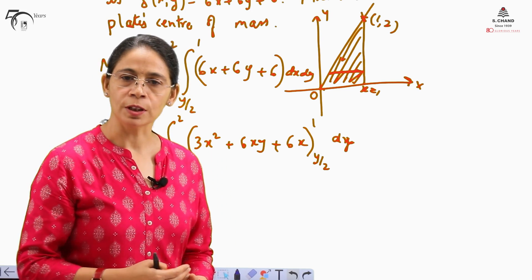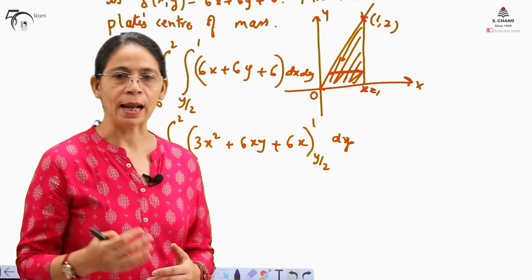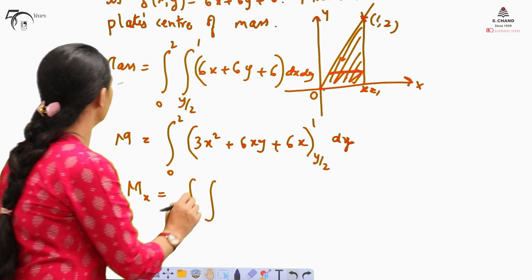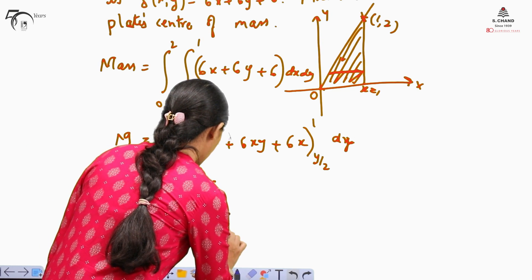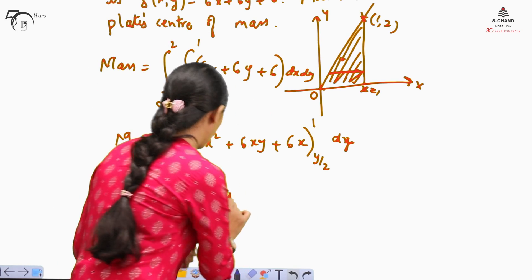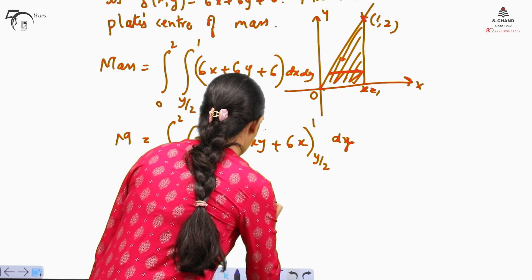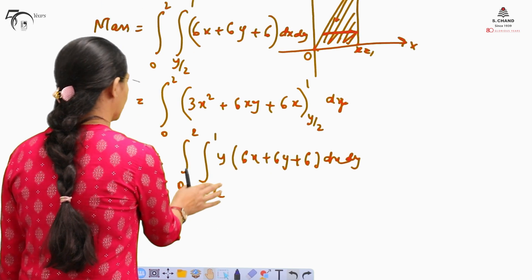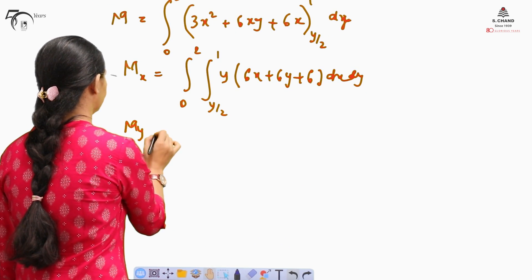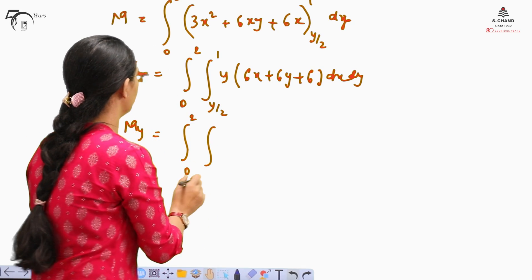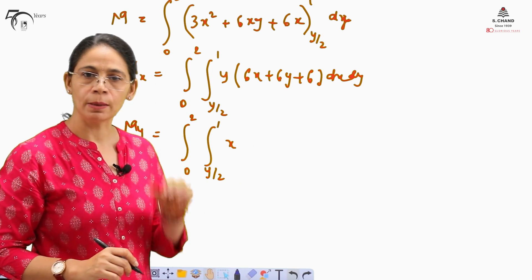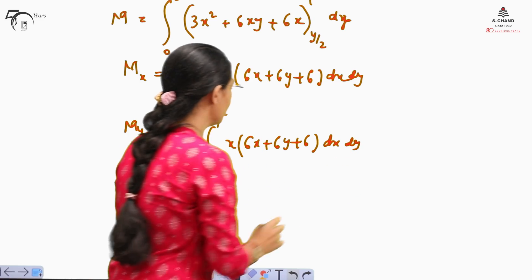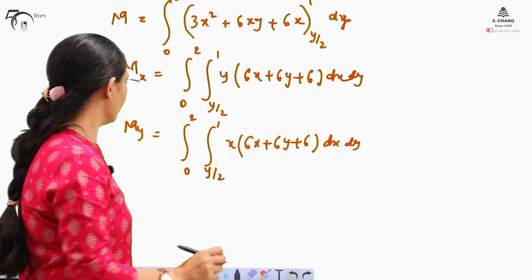Then we need to find out the first moments Mx and My, which will be used to calculate the center of mass. This will be your mass M. We need to calculate Mx by taking the same integration from 0 to 2, y/2 to 1, where the density is multiplied by y to find out the first moment Mx. So it is ∫∫ y(6x + 6y + 6) dx dy. We will calculate all these values and finally find out the center of mass.